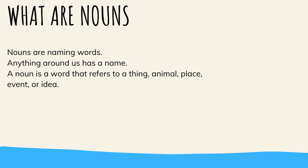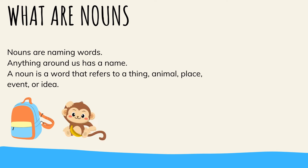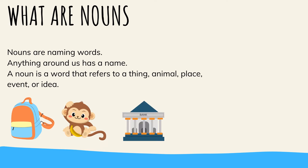For example, a bag is a noun. Why? It is because it's a thing. A monkey is a noun — it is an animal. What's this? It's a bank. It's a place, so it is a noun.